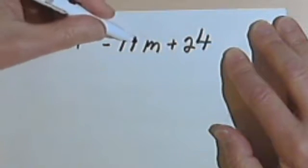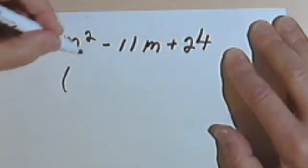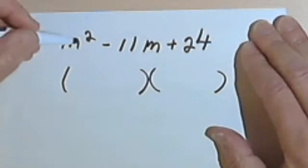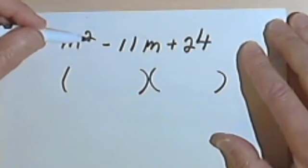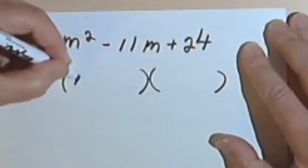I've got m squared minus 11m plus 24, and I want to factor that down into two binomials. I start out with this m squared, which means my variable in both of the binomials will be an m.